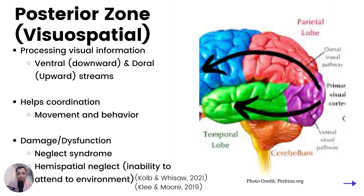Damage to this area will result in neglect syndrome. Hemispatial neglect is the inability to attend to features of the environment in the space contralateral to the lesion site. So in other words, if you get damage in this area, you may not be able to pick up on things in the environment and respond to them accurately.